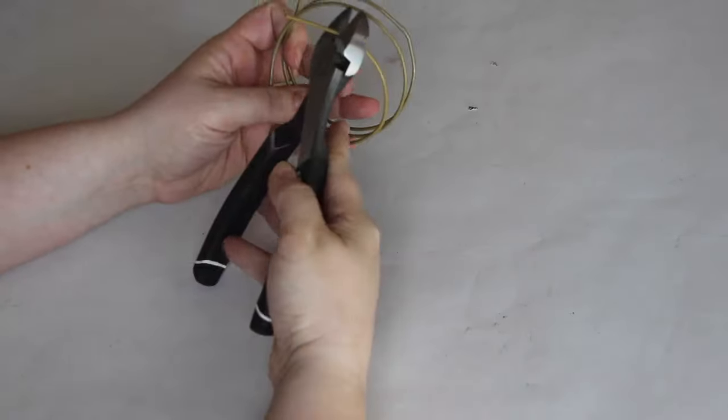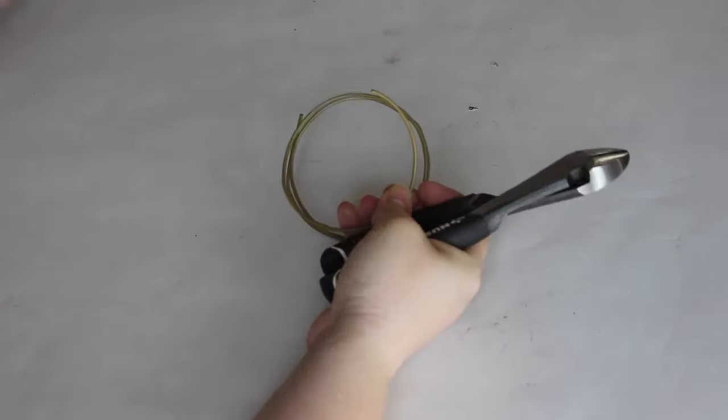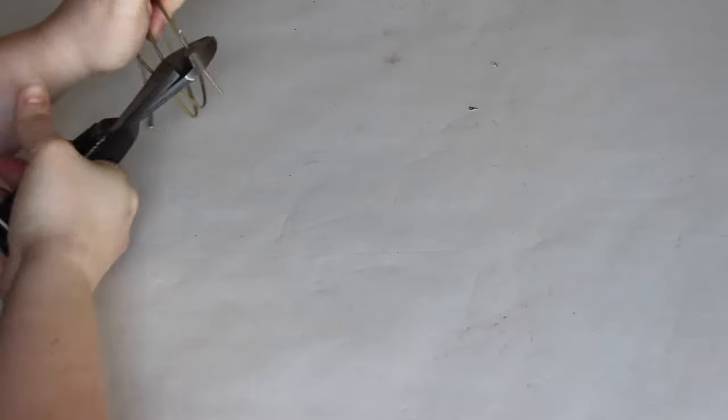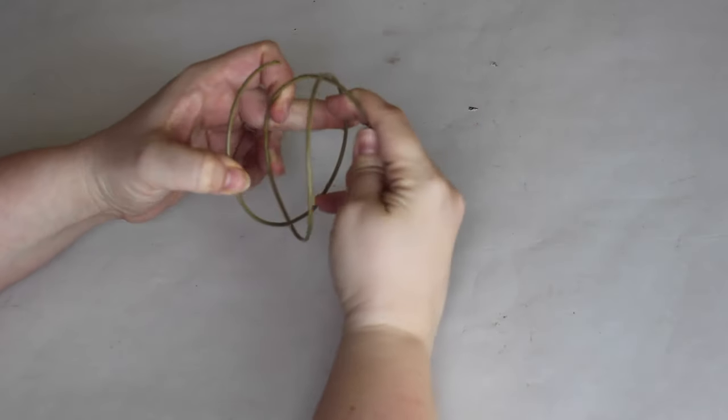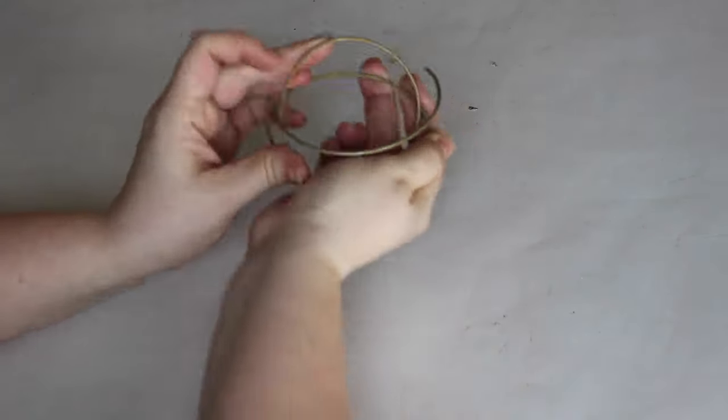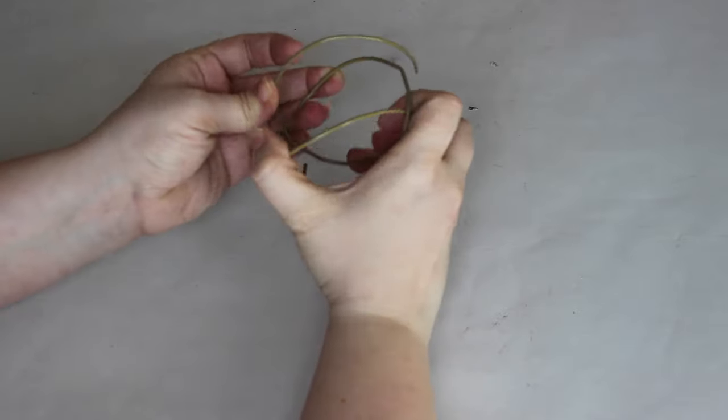Use your side cutters to cut off the remaining straight edges of the hanger. Next you want to bend and twist your hanger until it takes on a circular sphere-like shape.